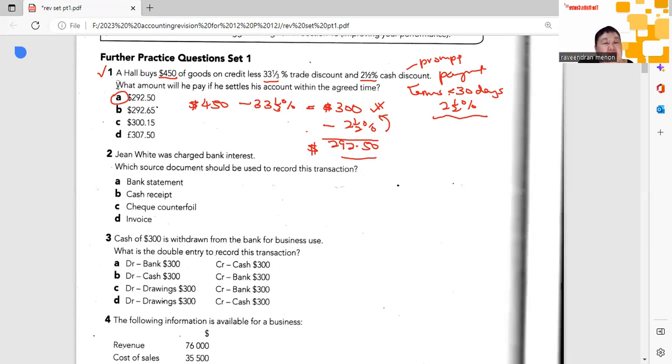Next one: Jane White was charged bank interest. Which source document should be used to record this transaction? Obviously bank interest will all be seen in the bank statement. Not the check receipt, not the counterfeit, not the invoice - obviously it's in the bank statement. No ambiguity. The bank statement will have all transactions, a document issued by the bank monthly depicting all payments, deposits, interest charges, direct debits, standing orders, etc.